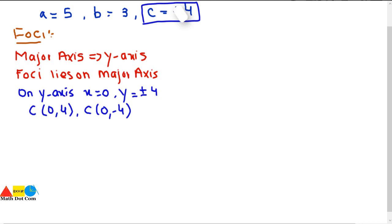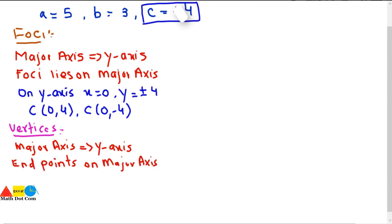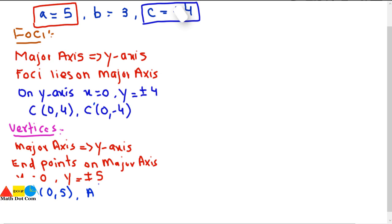Vertices are the endpoints of the major axis. Since the major axis is the y-axis, the endpoints have x = 0 and y = ±a = ±5, as a is the semi-major axis. So the coordinates of the vertices are A(0, 5) and A′(0, −5).